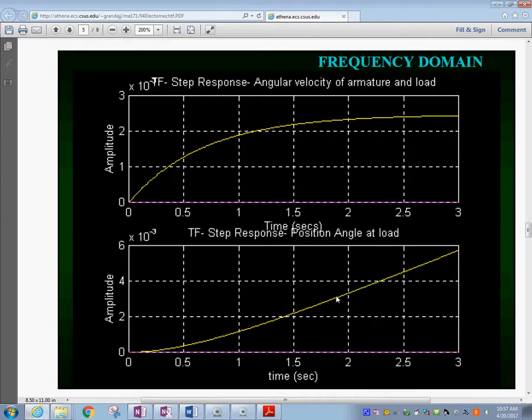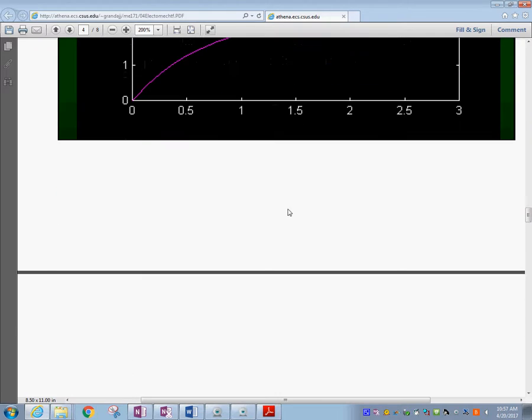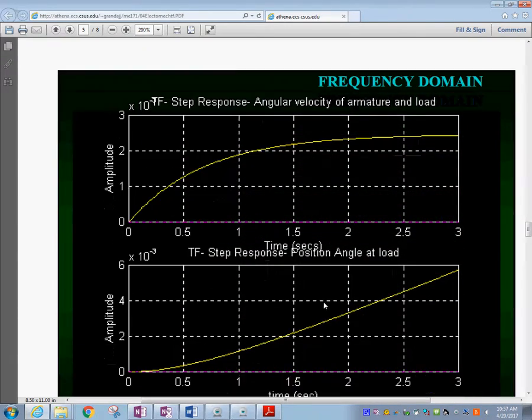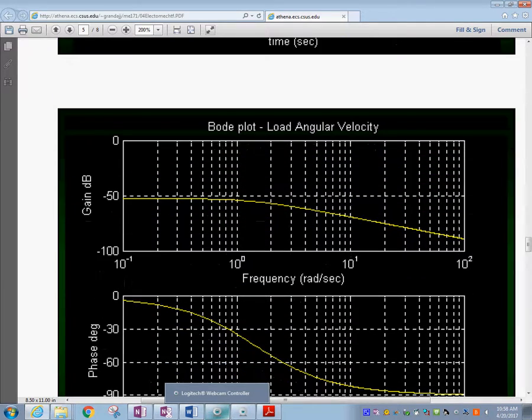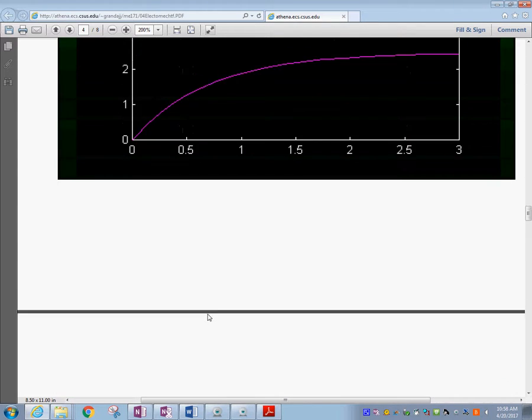Or you could do in the frequency domain by using the transfer function. So the first example uses the state space form for the time domain response and uses the transfer function for the frequency domain. You can see both of them have to look the same. Whether you work in the time domain or the frequency domain, I have illustrated how to obtain the state space response. Also, you have the option to obtain the Bode plots—the frequency response for the system.